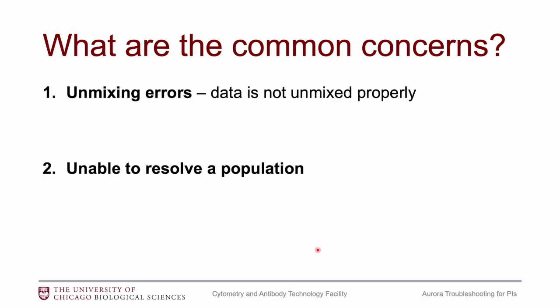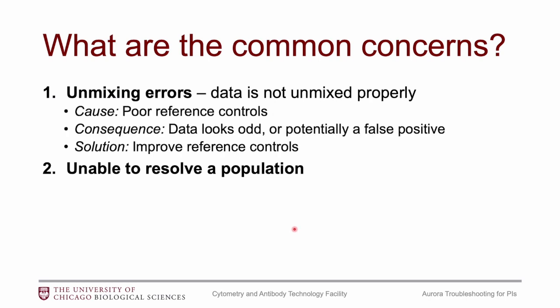On to the common concerns — these two concerns are something I ask all of my users to always be looking for. The first has to do with unmixing. Just like you want to check compensation on a conventional cytometer before analyzing data, you also want to check the unmixing on spectral data. If the unmixing is incorrect, you could end up with data that looks odd, or potentially get a false positive. This all has to do with the reference control — better reference controls give you better unmixing.